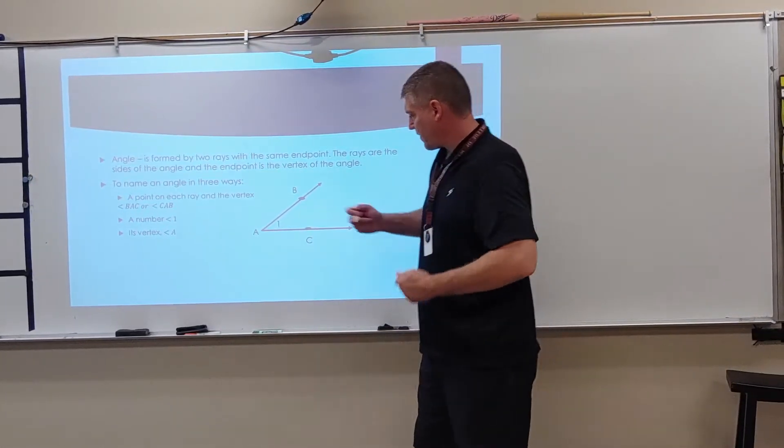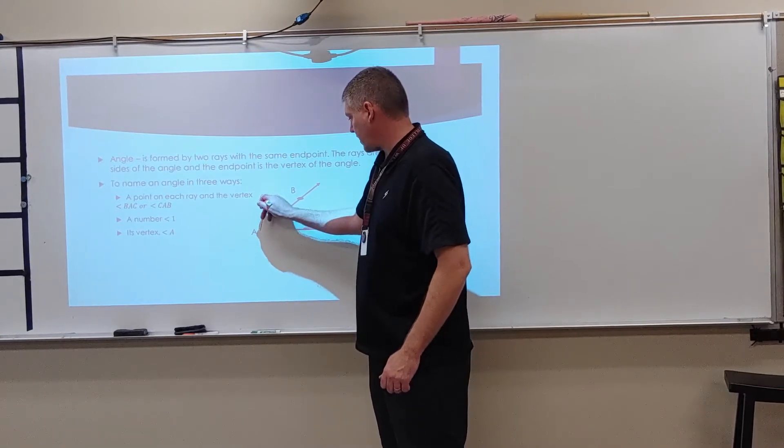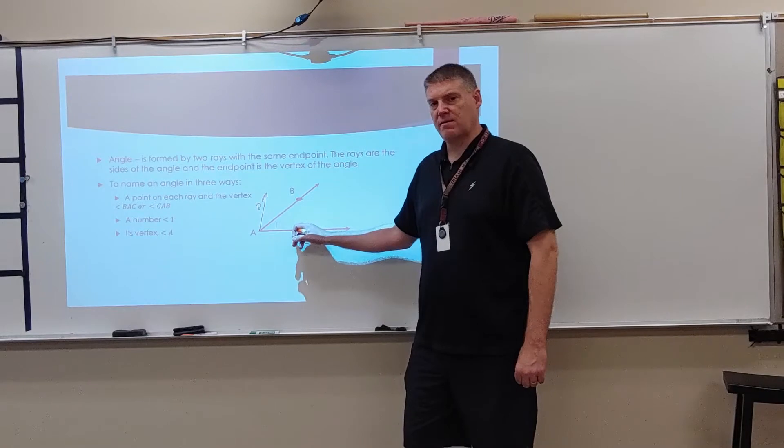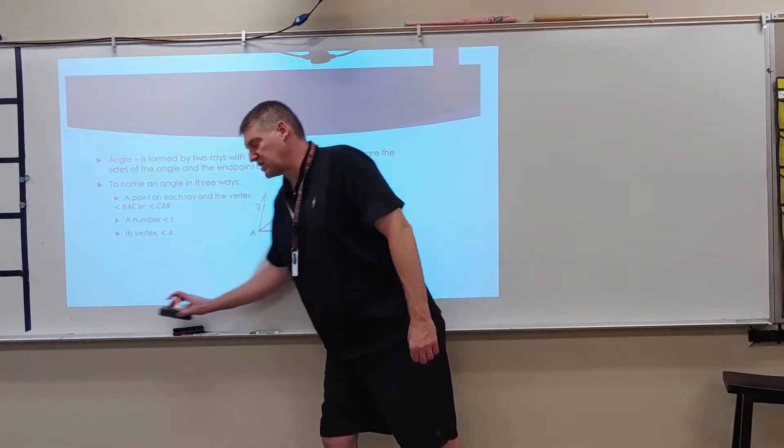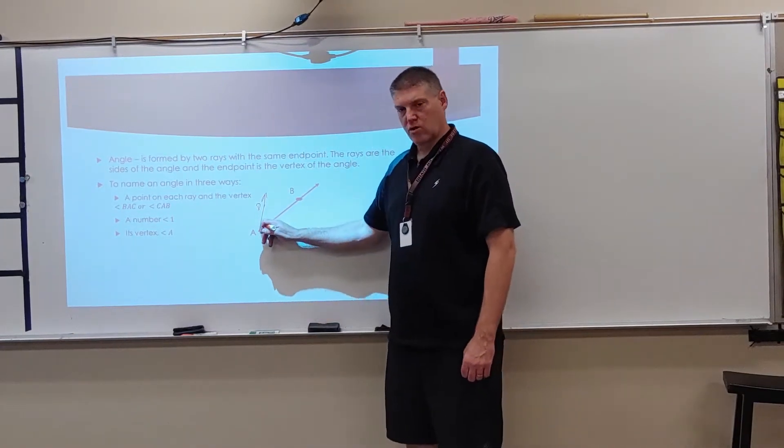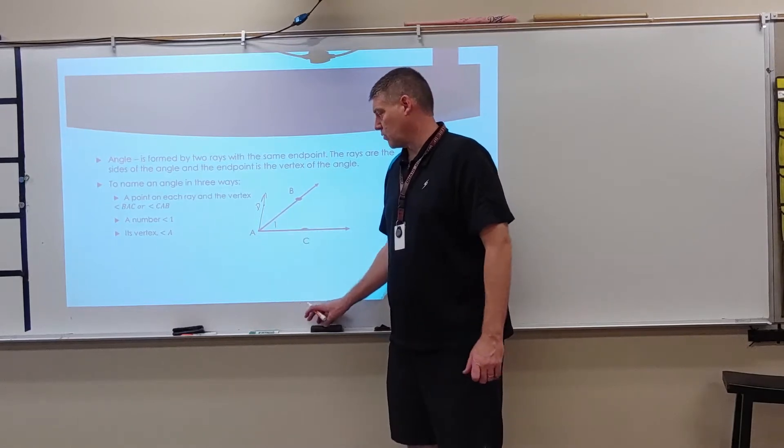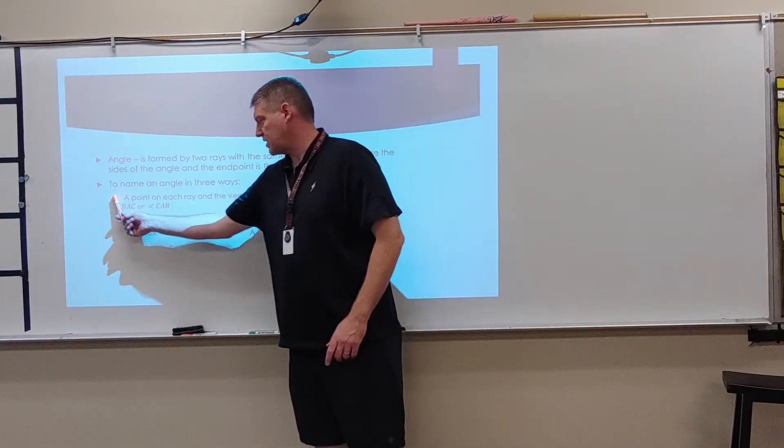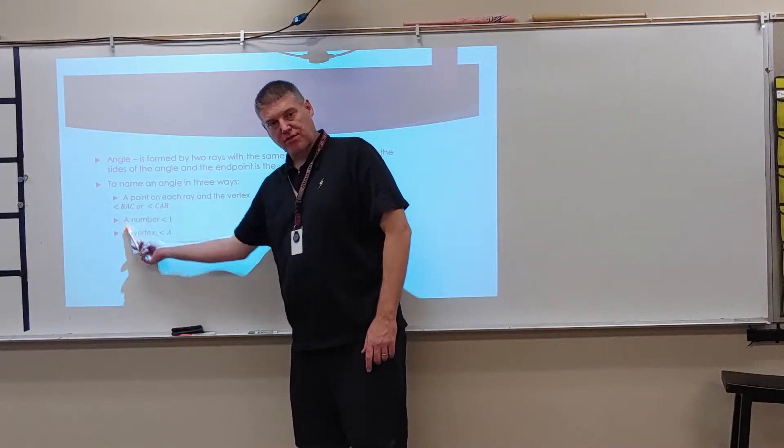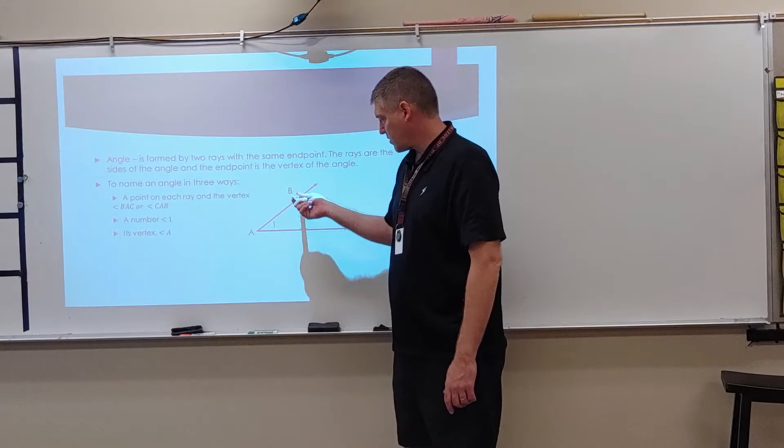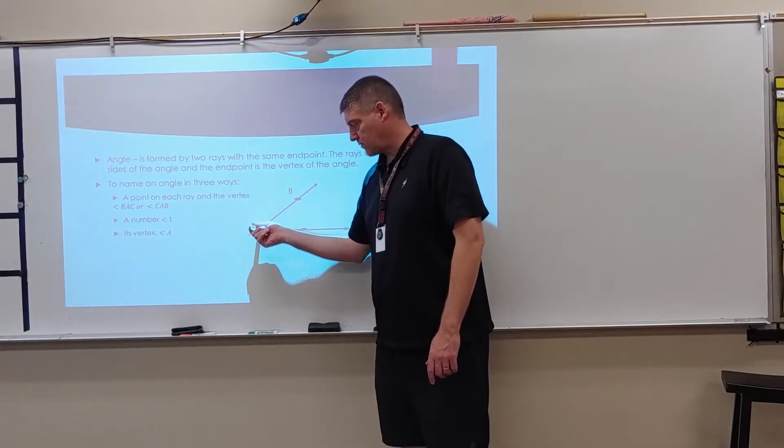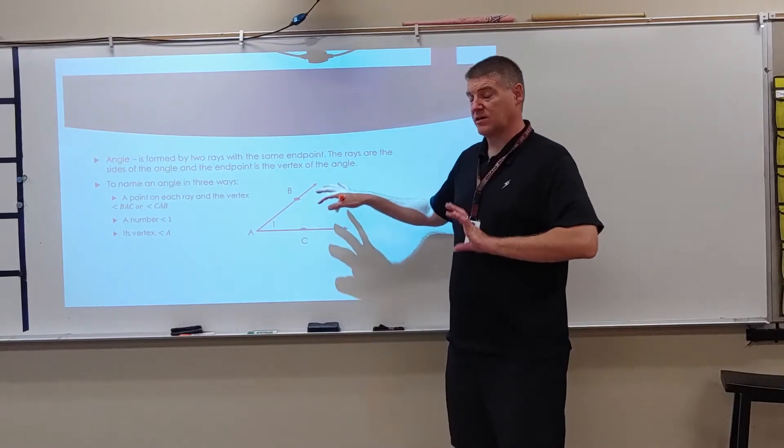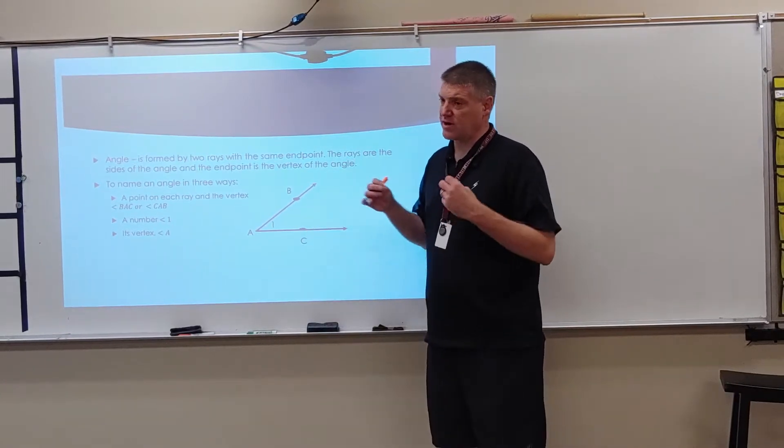So, for example, if I had another ray coming off of this and I had a point D here, I can no longer name that by angle A. The reason is because then it doesn't tell the reader which angle you're actually working with. So I would like you guys to really get in the habit of naming it with three letters. So remember it goes side, vertex, side. Side, vertex, side. So we want to make sure that we understand how to name angles. It's very important.